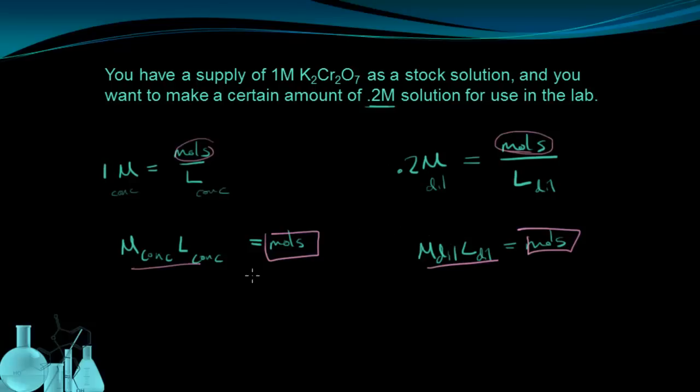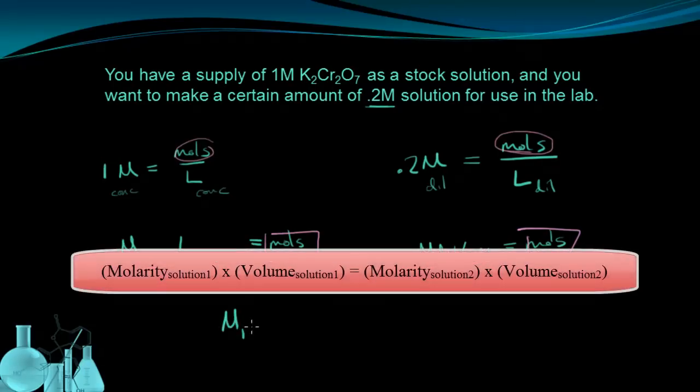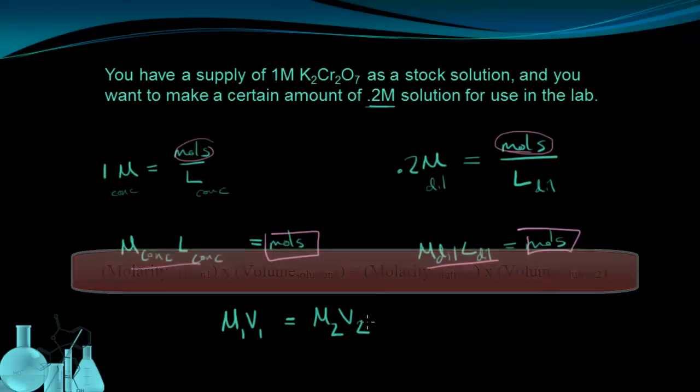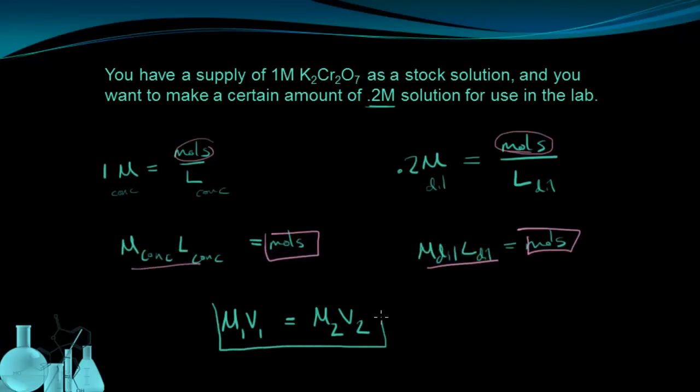In fact, the more general way of writing it is that the molarity of the first solution times the volume of the first solution will equal the molarity of the diluted times the volume of the diluted. M1 times V1 equals M2 times V2. This is a general equation for figuring out how to dilute a solution.